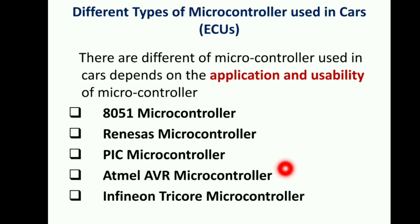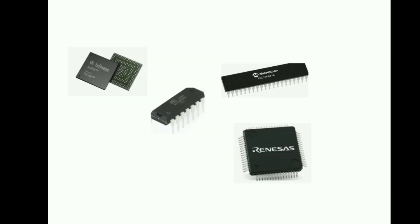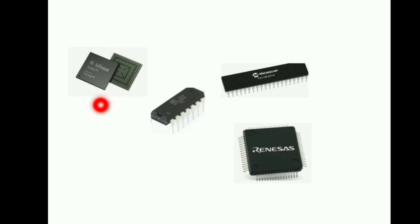If you look in depth, you can also see Renesas, PIC microcontroller, and 8051. So these are all the major microcontrollers. If anybody asks what microcontrollers can be used in cars, these are the five. These are all just images shown here — in your ECU you can definitely see them. If you see one, just leave a comment about what microcontroller you have seen in your ECU — it will really help others to understand.